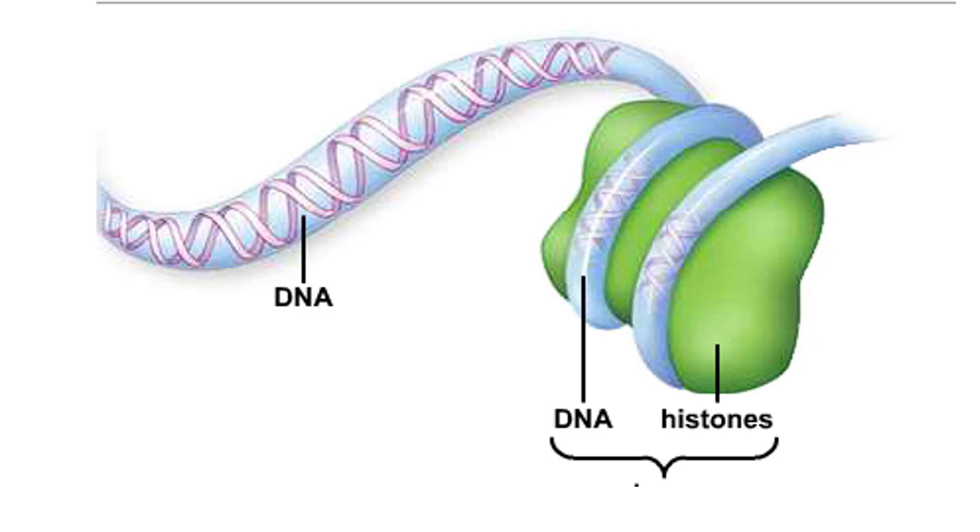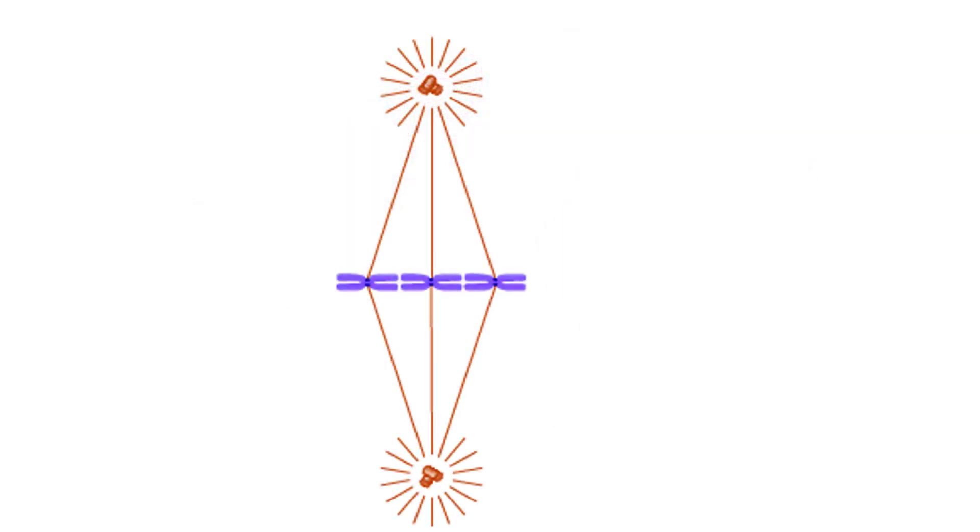Nucleosomes can loosen in controlled ways to give enzymes access to specific DNA regions. At mitotic metaphase, the fully formed spindle is composed of many microtubules that extend from the poles.